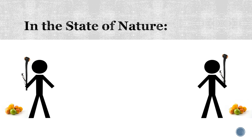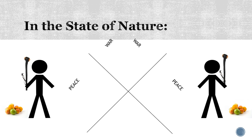Because you know those are your options, you know those are their options too — this is all common knowledge. They know they have the same two options: peace or war. And as I've said before, every time you can make a table, you should. If you both choose peace, you get a live-and-let-live outcome — a pretty good outcome that lets everybody continue on. But if you choose peace and your opponent chooses war, they kill you and take your fruit. That's a disaster for you and a win for them.